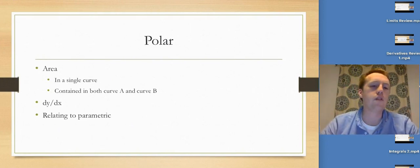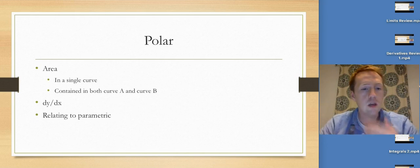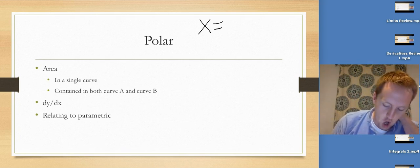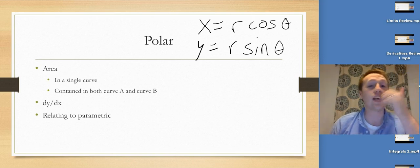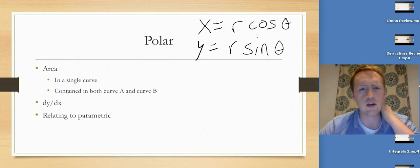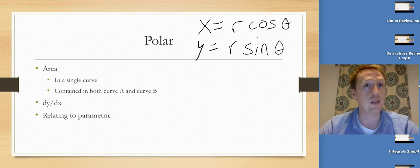Now let's talk about polar. The big things are area within a single curve or contained inside two curves, and dy/dx relating to parametrics. Remember: x = r·cos(θ) and y = r·sin(θ). That's how we get dy/dx — it's (dy/dθ) over (dx/dθ). As often as possible, just do it in the calculator since they usually want it at a point, not a function.